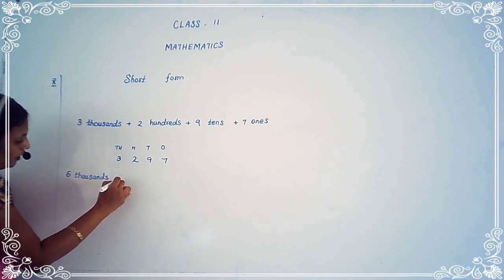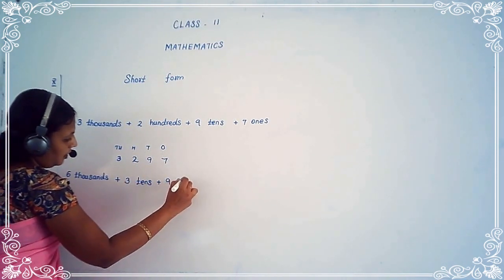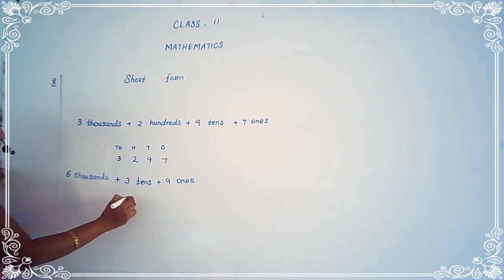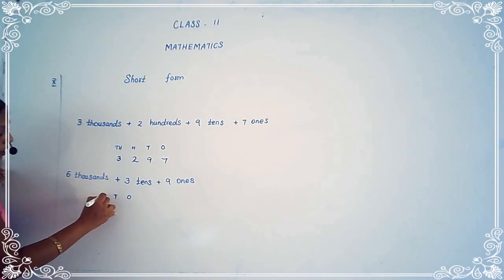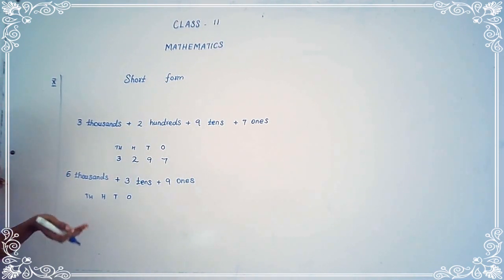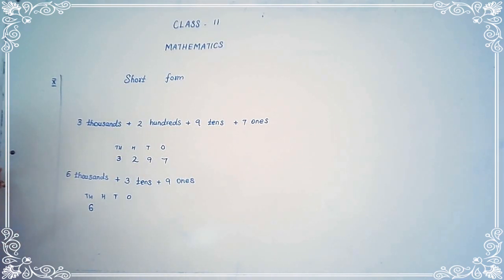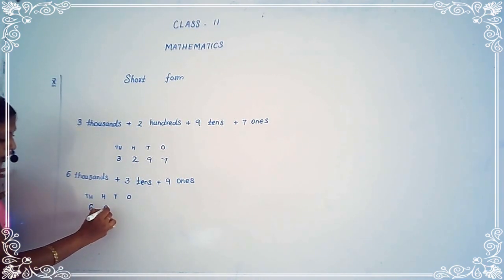Example two: six thousandths plus three tens plus nine ones. First, write the periods: ones, tens, hundreds, and thousands. We want to see the thousandths place. How many thousands is here? Six thousand. So we have to write six in the thousandths place. Then see the hundreds place — they did not give a hundreds place value, so we can use zero to fill the hundreds place.